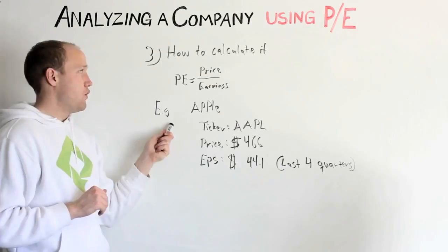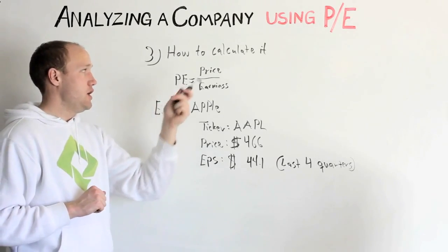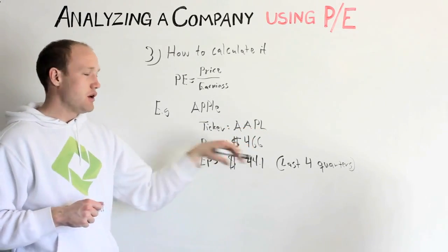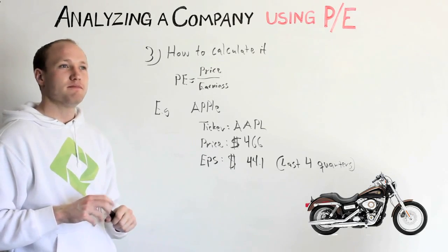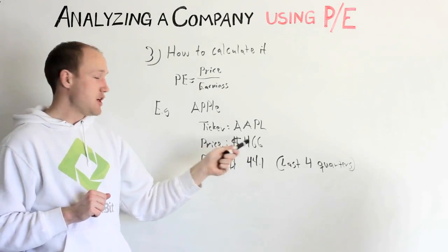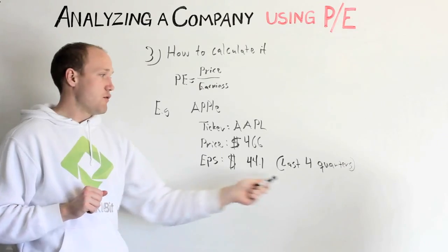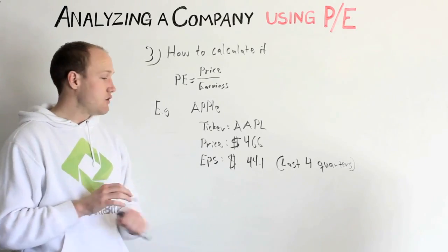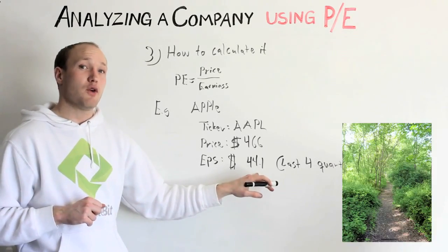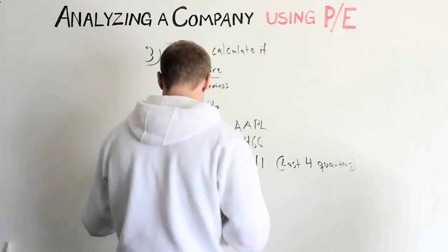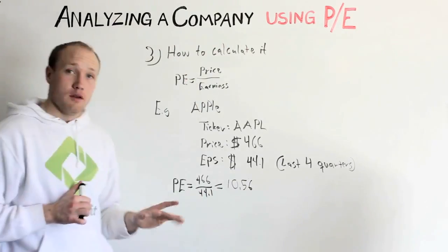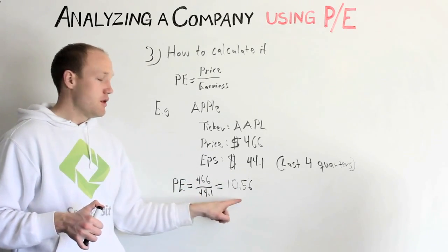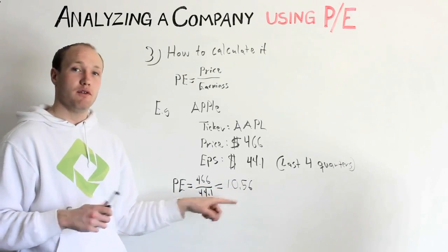How do we calculate it? PE is price divided by earnings. Apple has the ticker AAPL — that's how you can find it. They have a price of roughly $466 per share. Their EPS for the last four quarters summed up is $44.1. Most sites will give you this, and it's called the trailing 12 months. So if the price is $466 and the EPS is $44.1, the PE is 10.56.